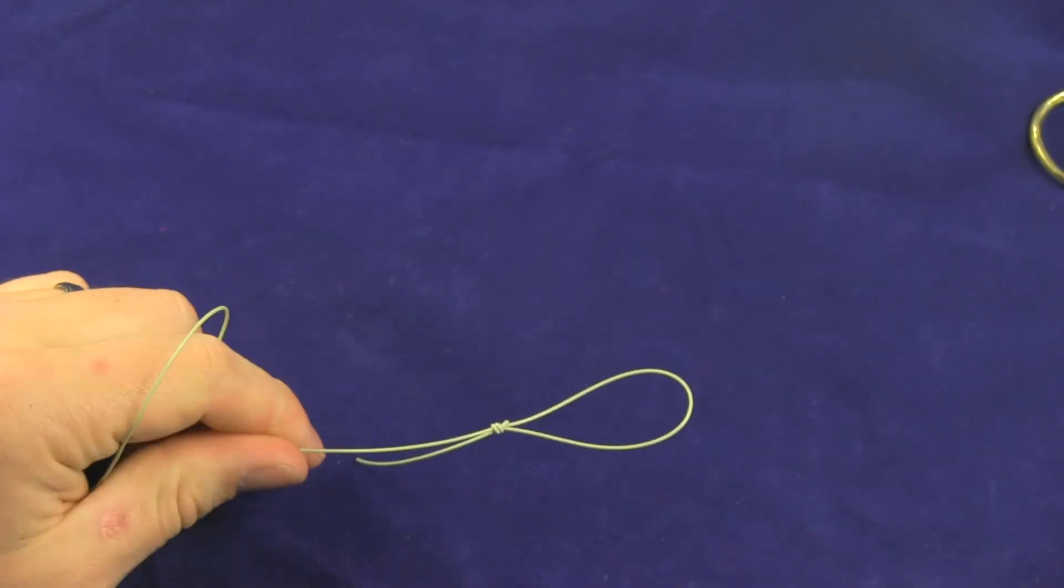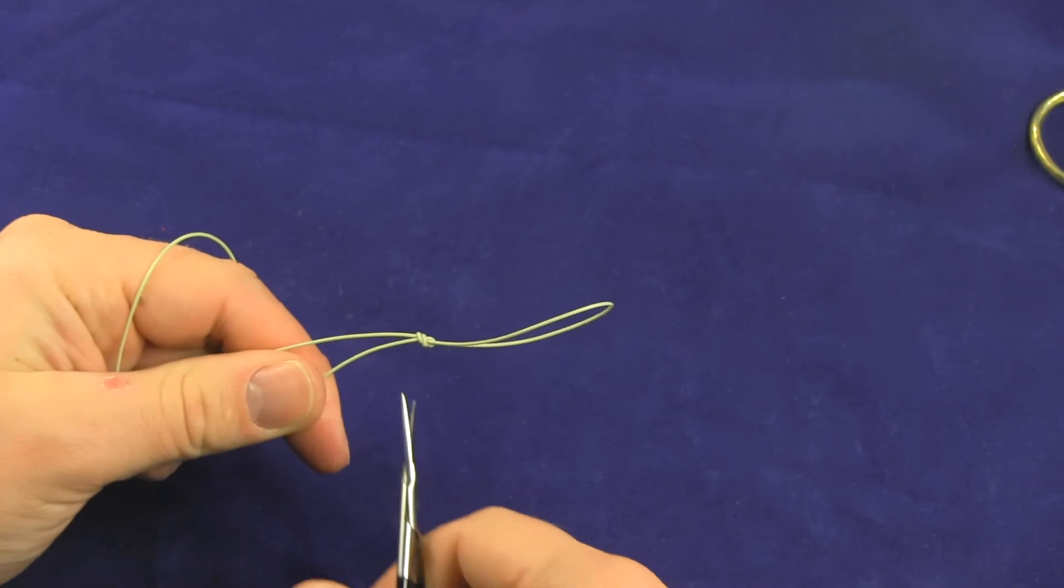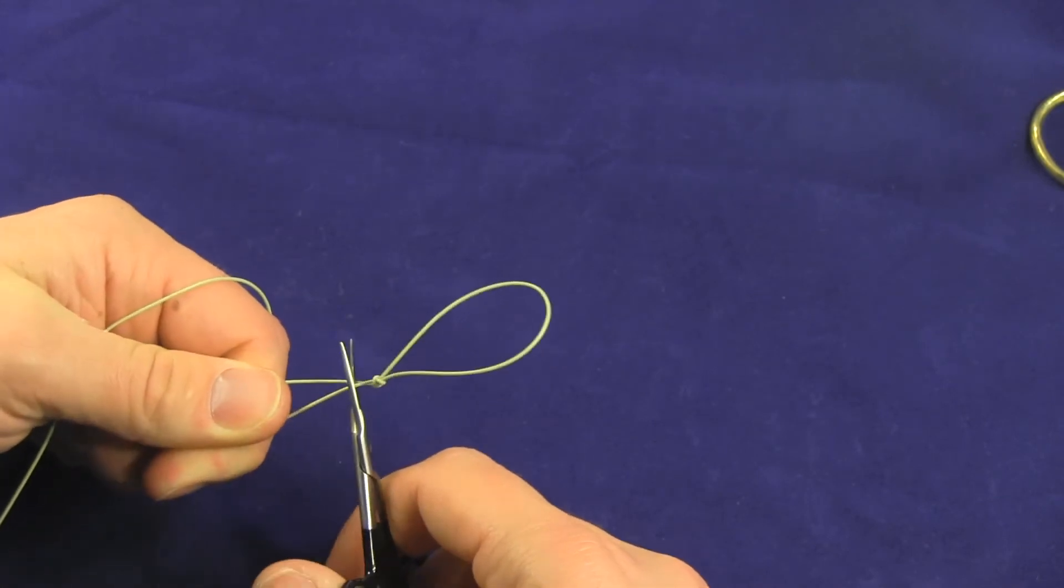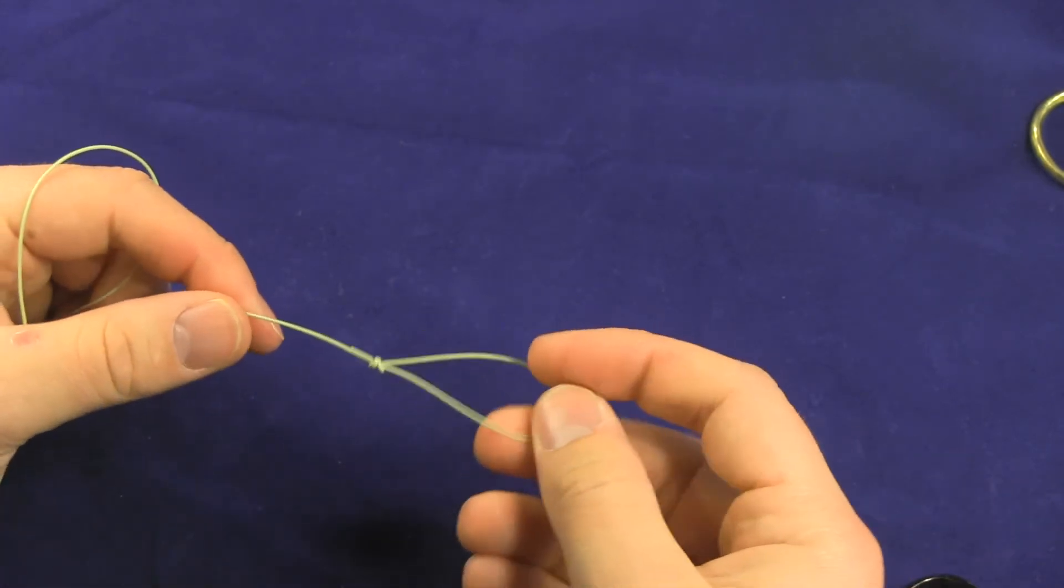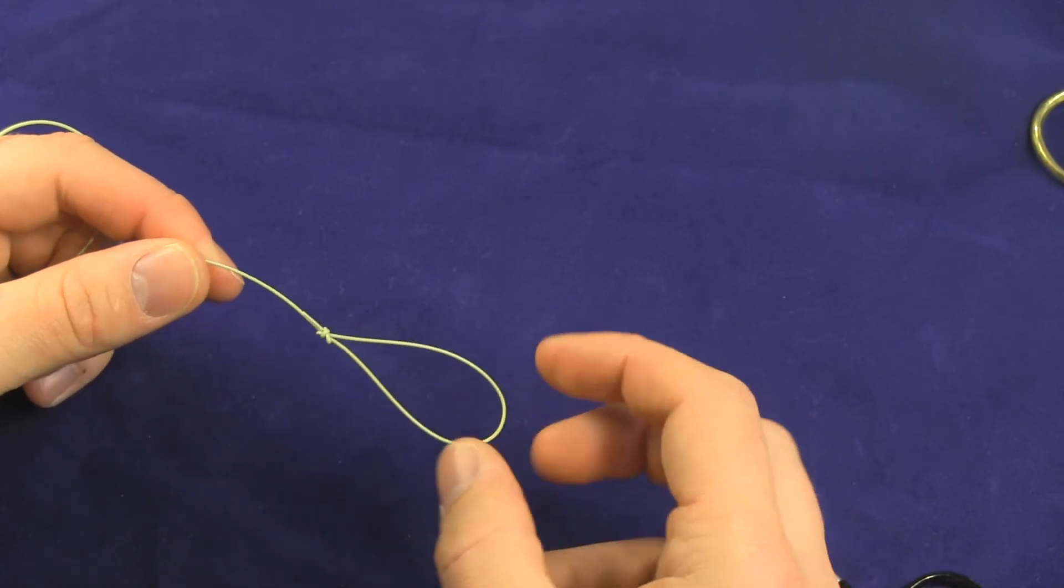This is a really extremely strong loop. The only downside of it would be that it's not a straight loop like a perfection loop, so whenever you do have it hanging off it is not an inline loop.